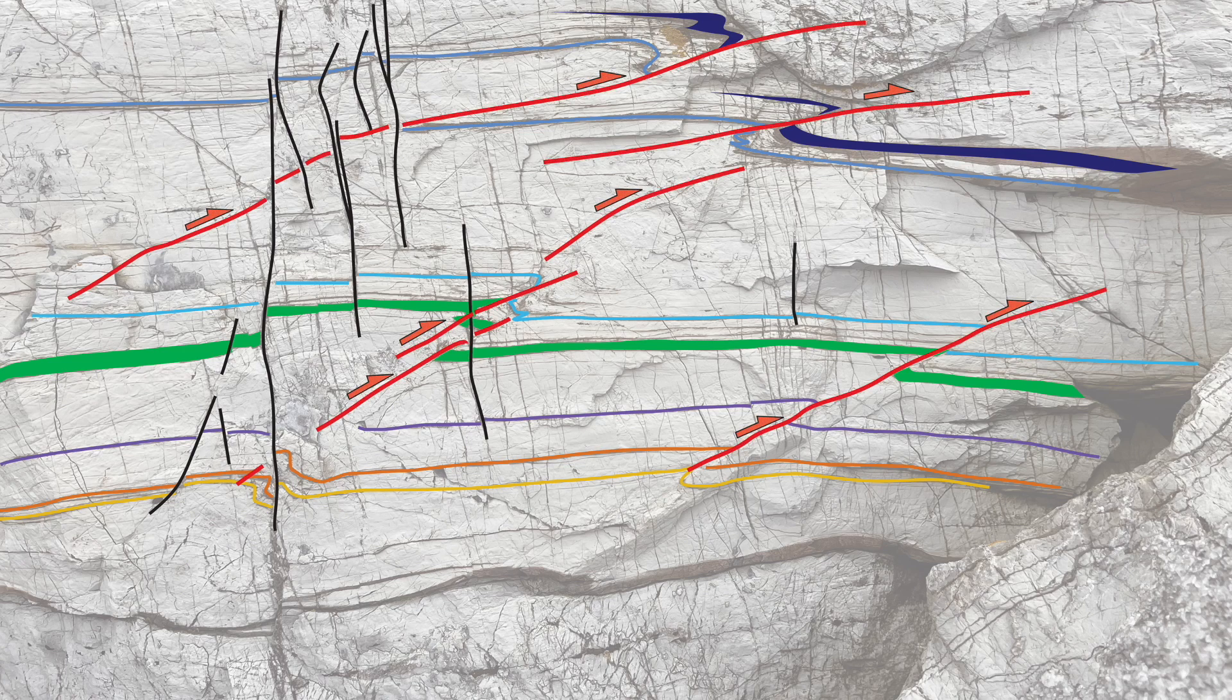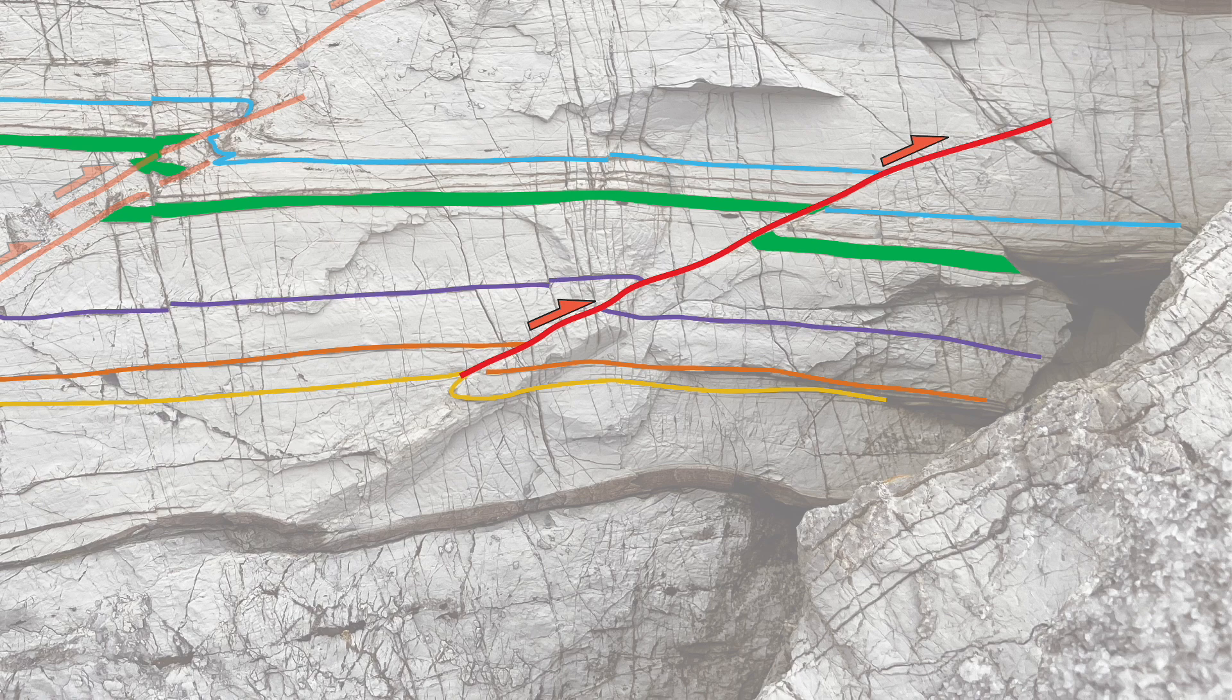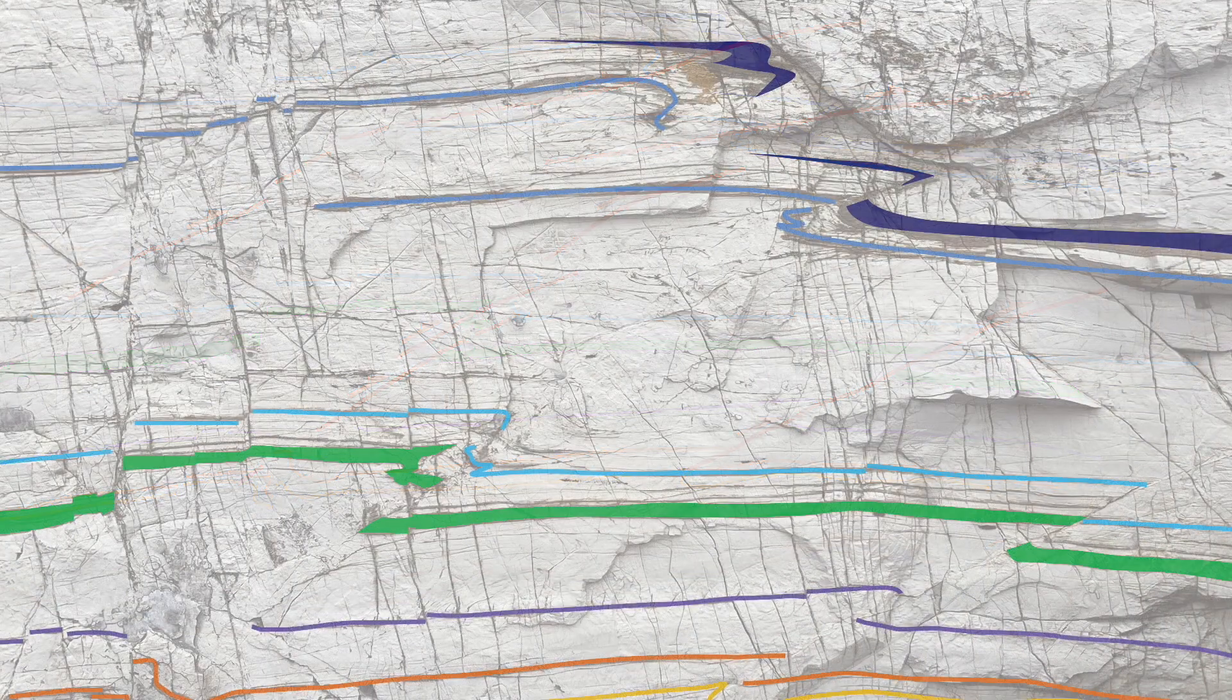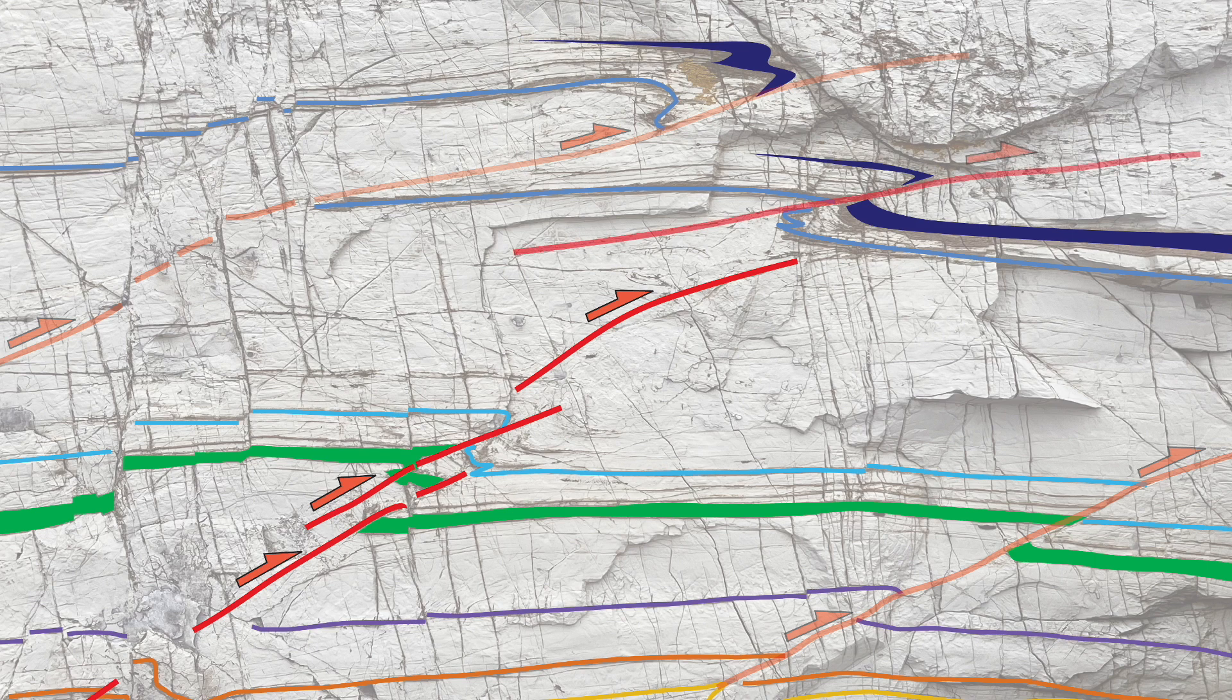They're thrusts that push the green layer over itself. This thrust seems fairly simple and cuts across the layers. But others are more complex. This thrust is segmented. And as we follow up through the layers, we see more segmentation, a behavior that's called soft-linked.